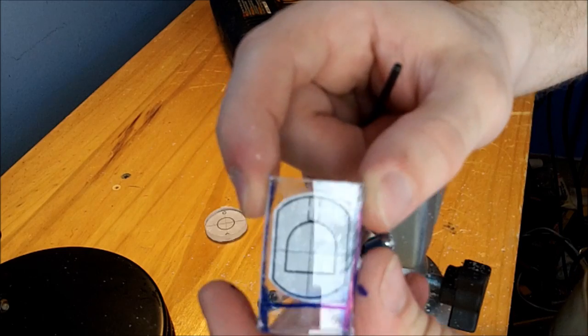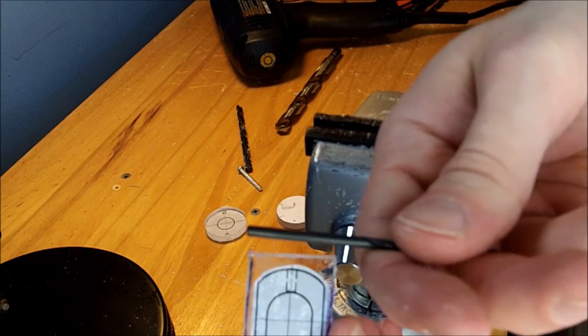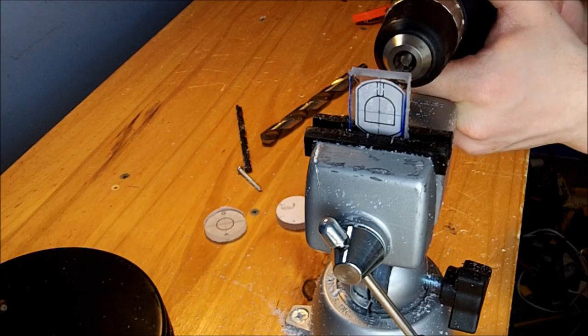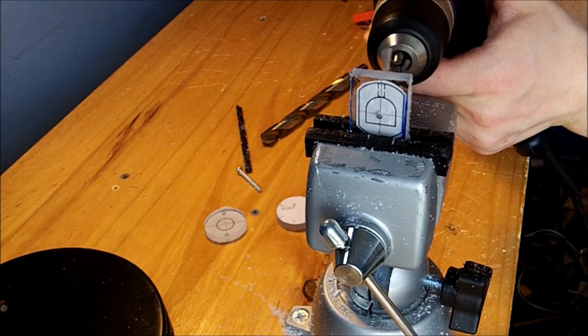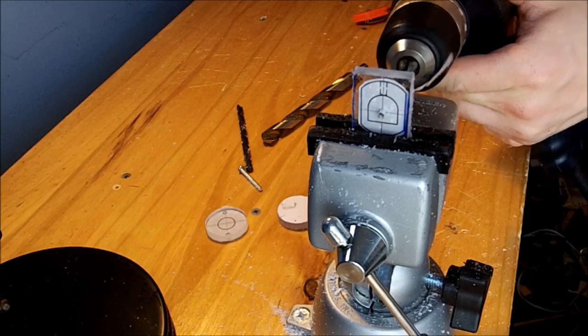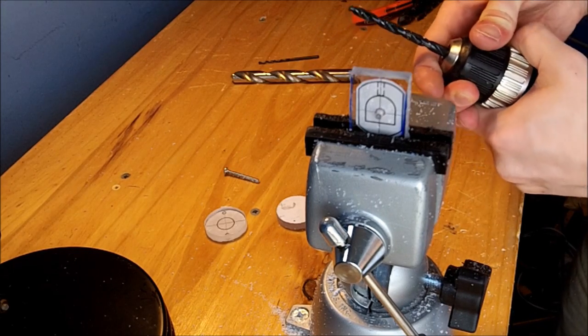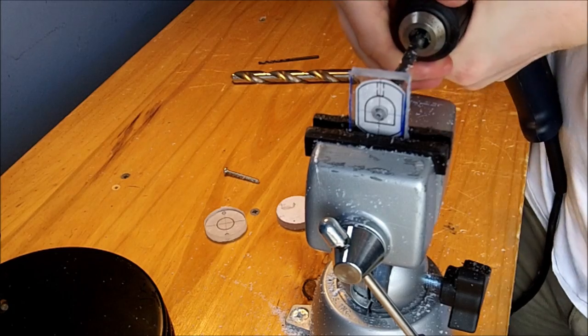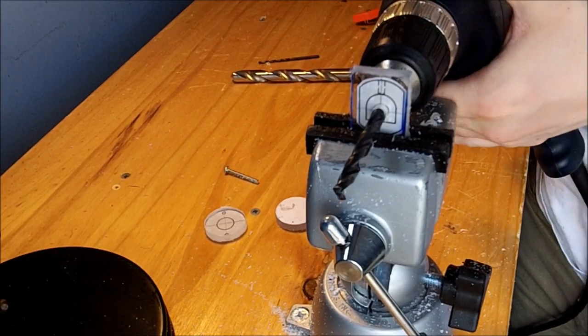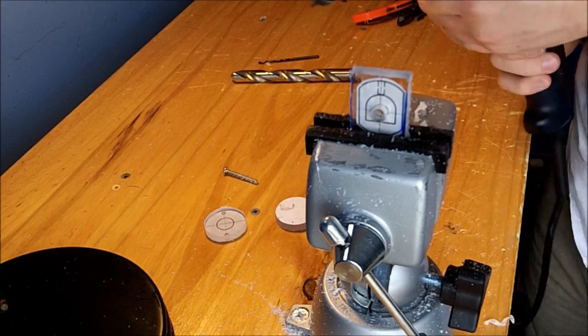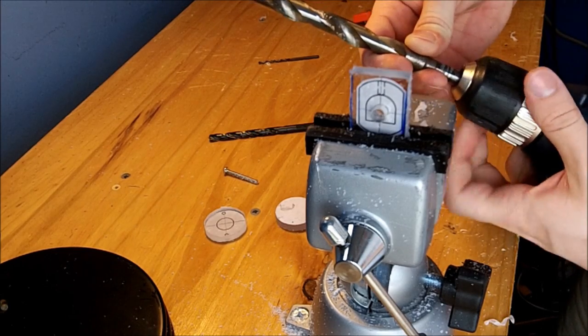To make the hole in the catch plate, we're going to start with 7/64ths drill bit. Then move up to one quarter, then finish with one half.